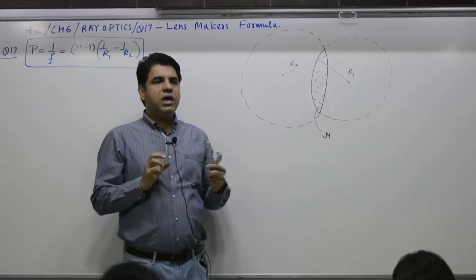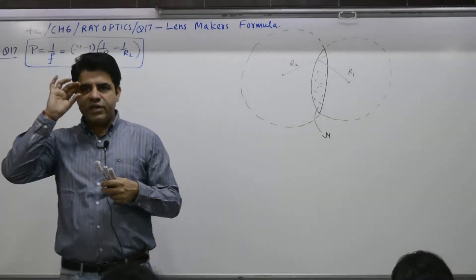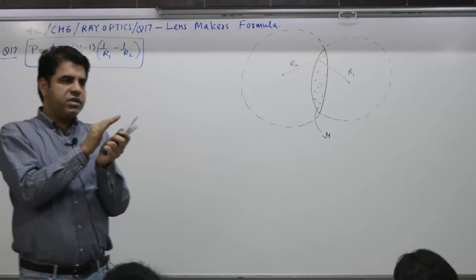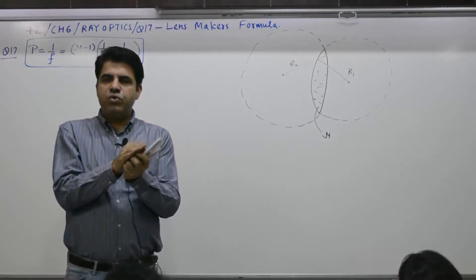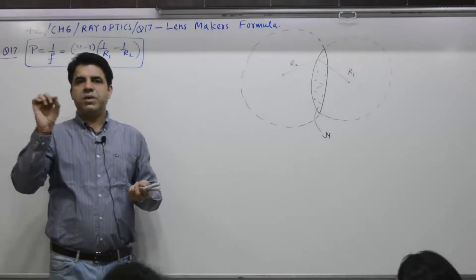So how a lens maker will make a lens? You have some defect in your eyes, so you come out with some power. You order that I want spec with the power, say plus 2.